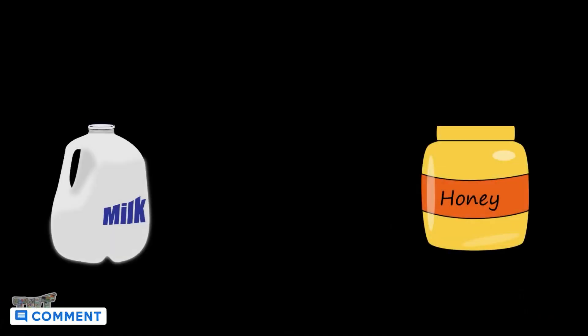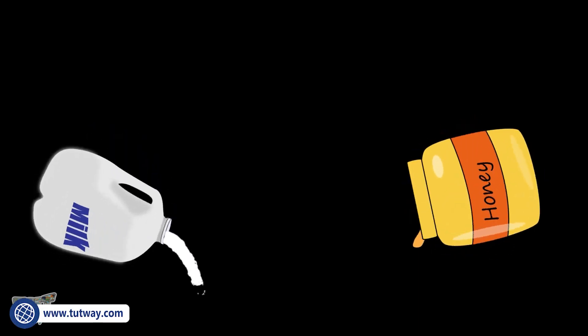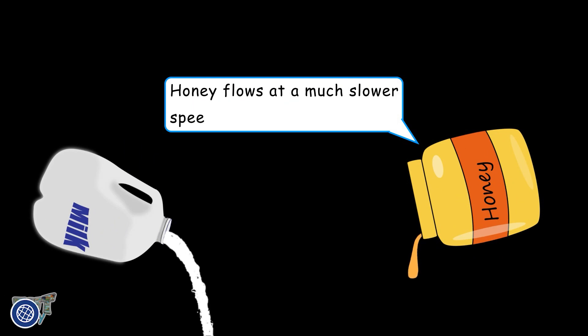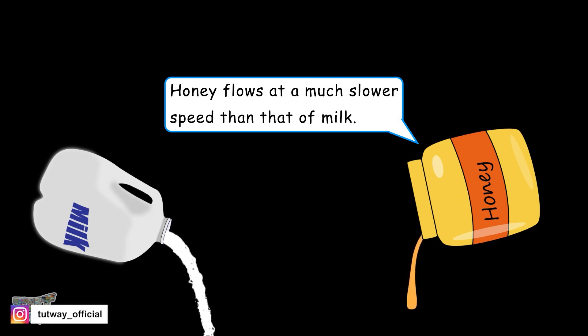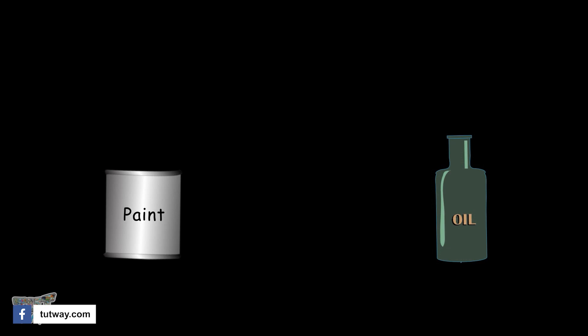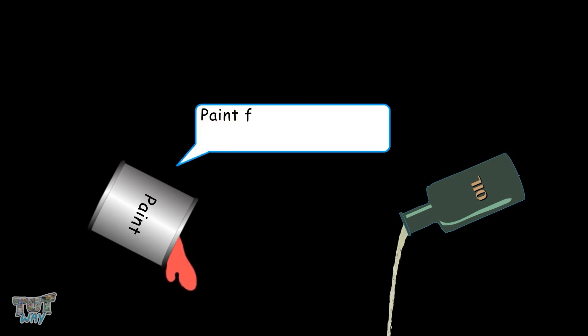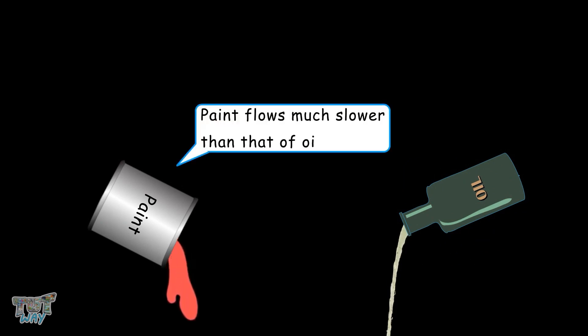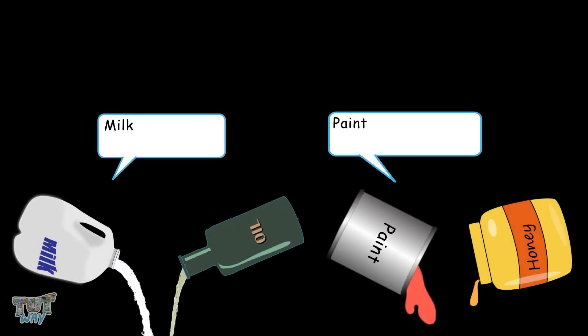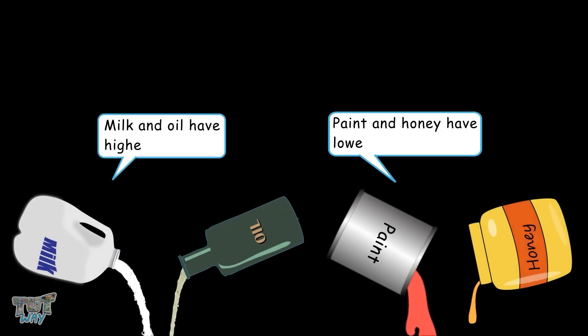Here we have two liquids, honey and milk. Let's study how they flow. You can easily see that the honey flows at a much slower speed than milk. Here we have two more liquids, paint and oil. Compare how they flow when we pour them. Paint is flowing much slower than oil. So we can say that milk and oil have a higher flow rate than that of honey and paint.